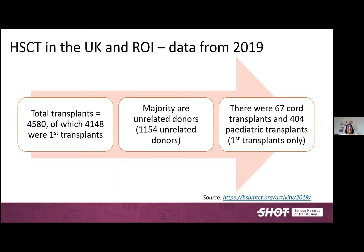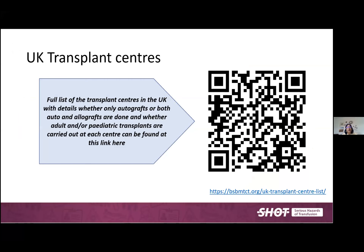To give a perspective of how many transplants happen in the UK, this is slightly older data from 2019, available on the BSBMTCT — the British Society of Bone Marrow Transplant and Cellular Therapy — website. The number of transplants is increasing year on year, with total transplants around 4,580. More than 90% were first transplants. Majority of donors were unrelated, though there were also many sibling donors. Pediatric transplants numbered 404, largely counted as first transplants. This QR code takes you to the full list of transplant centers, showing whether centers offer autografts, allografts, or both adult and pediatric transplants.